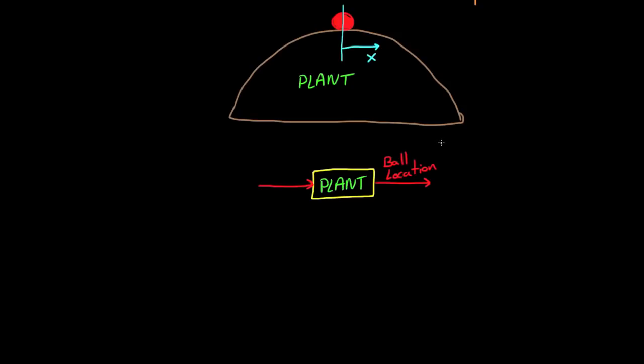The plant consists of the ball and the mountain, and the output of the plant is the horizontal position of the ball.